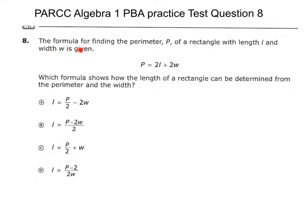So this one says, the formula for finding the perimeter P of a rectangle with length L and width W is given. So basically they're telling you, here is the perimeter formula.